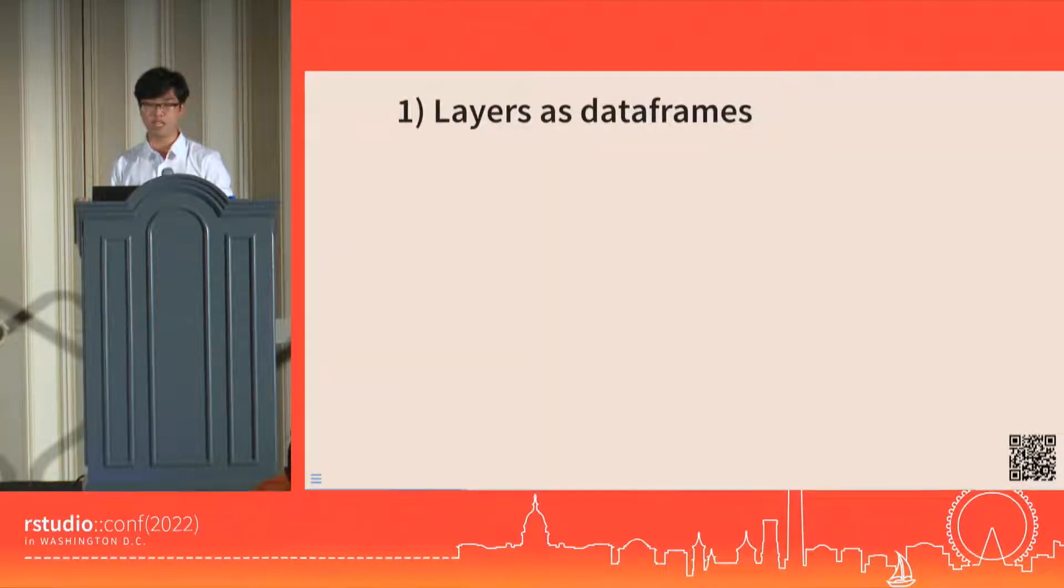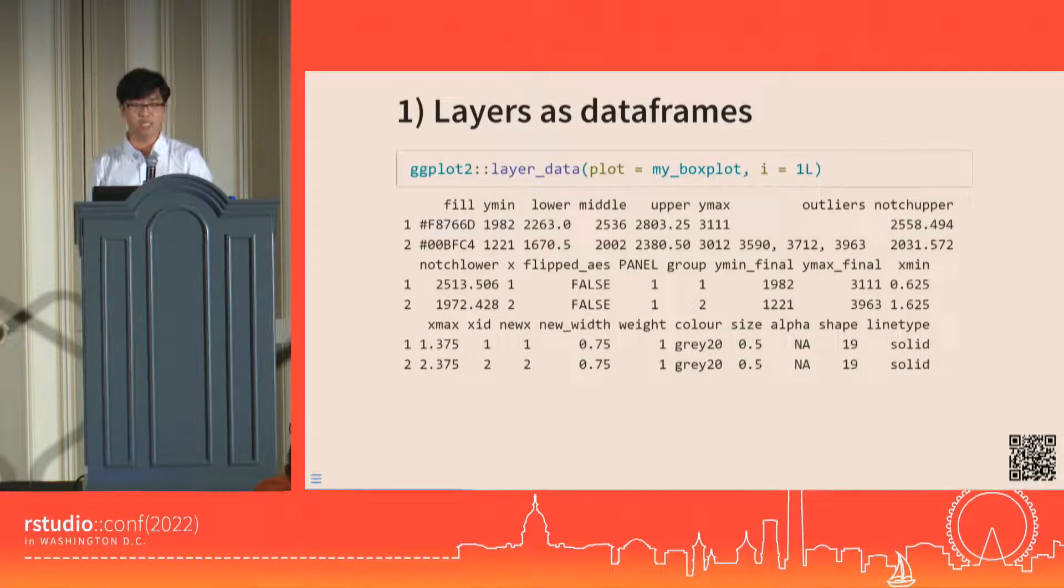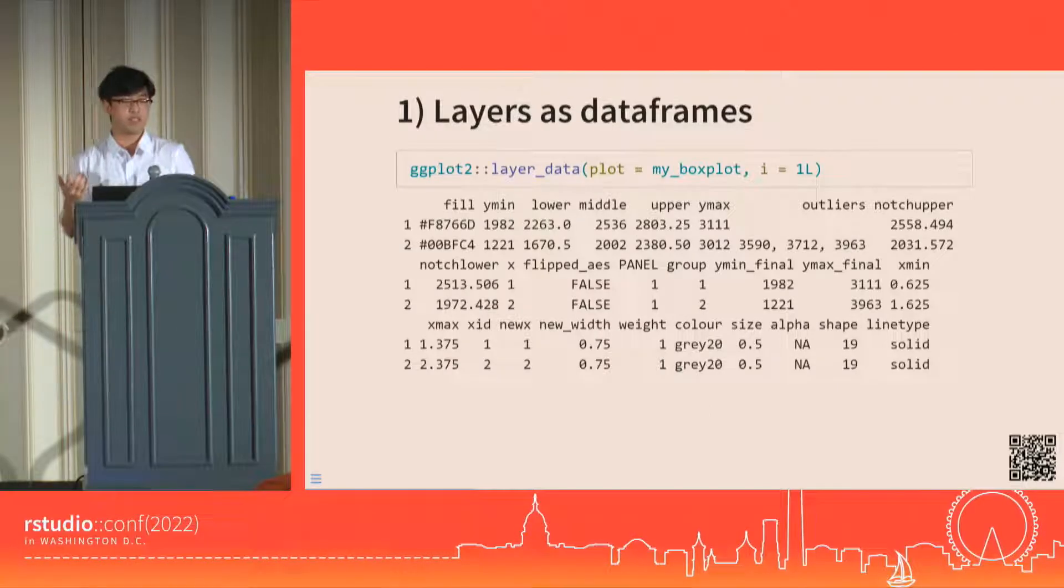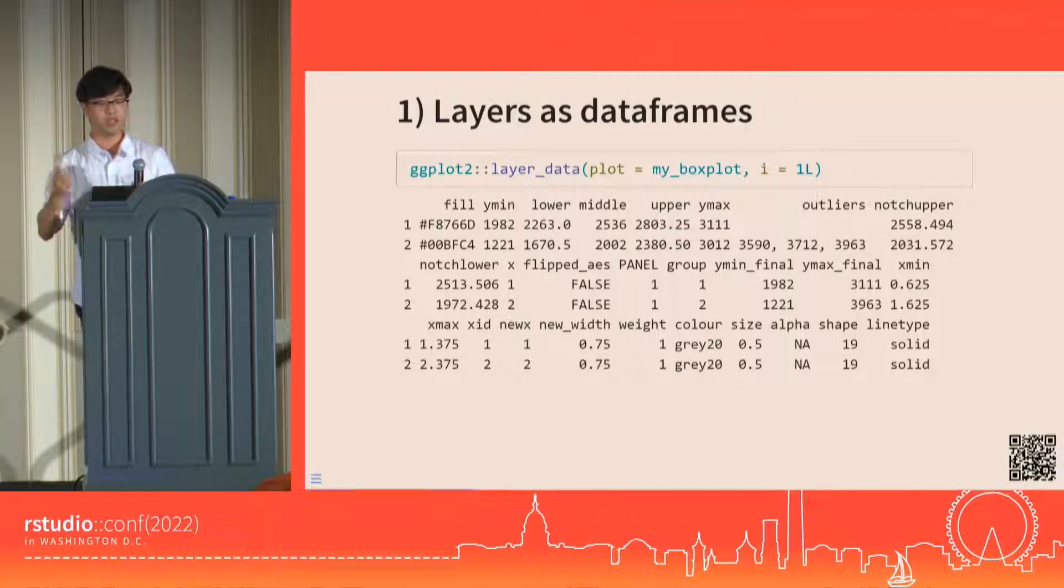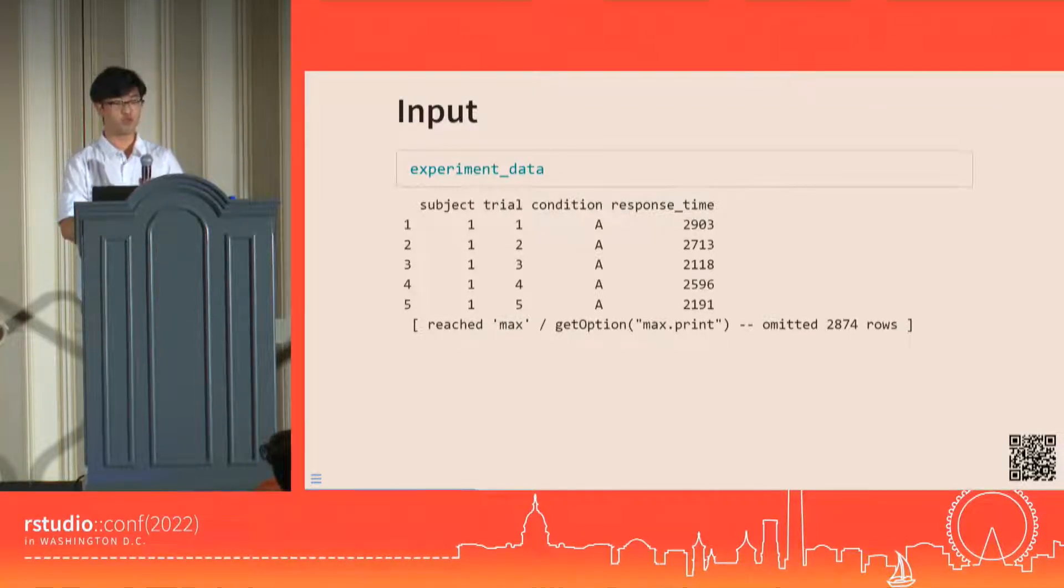Our dive into the internals begins with this factual observation that each layer of a ggplot has an underlying data frame representation. In other words, layers are just data frames until they get drawn. We can actually see this using ggplot's own layer_data function. We pass it our plot and the index of the layer we want to inspect, and it gives us the data that's underlying the boxplot layer of our plot. This is the actual data frame that gets sent off to the quote-unquote drawing system, which is kind of like the graphical object land with grid functions and gtable functions.